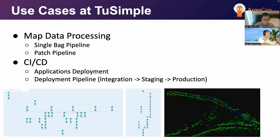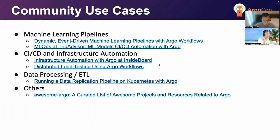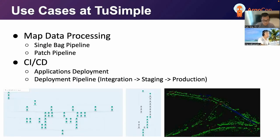We have a lot of pipelines in our whole map building process, like a single bag processing pipeline and the patch pipeline. We also use Argo Workflows not only for the map building process, but also in our CI/CD system for application deployment and deployment pipelines. Here are some screenshots of our workflows and the data processing intermediate results. As you can see in the pictures, we have some complex workflows, and on the right side we have some map building intermediate data.